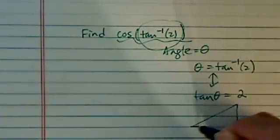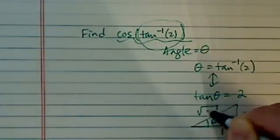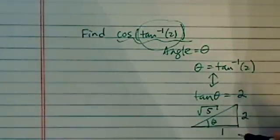From here, you can draw a right triangle having 2 here and 1 here. This is theta. Using the Pythagorean Theorem, you have √5 here, because 2 squared plus 1 squared.